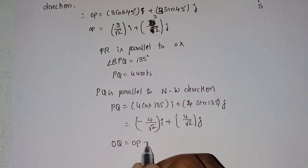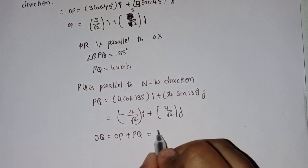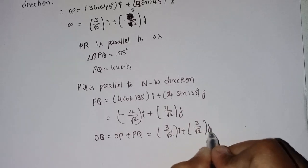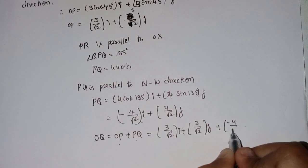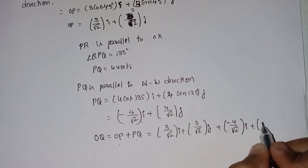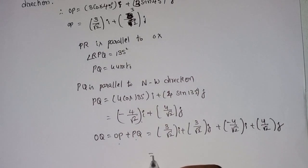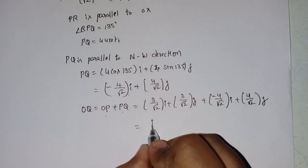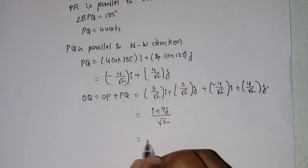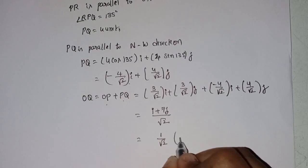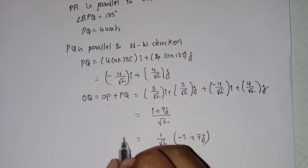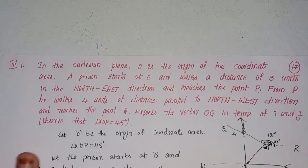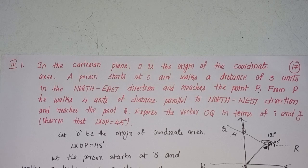OQ equals OP plus PQ. OP is 3 by root 2 i plus 3 by root 2 j. Plus PQ is minus 4 by root 2 i plus 4 by root 2 j. This gives us minus 1 by root 2 i plus 7 by root 2 j, which equals 1 by root 2 into minus i plus 7j.